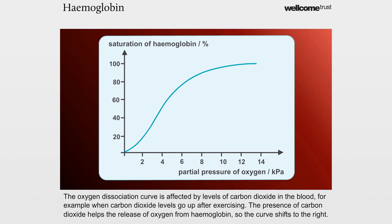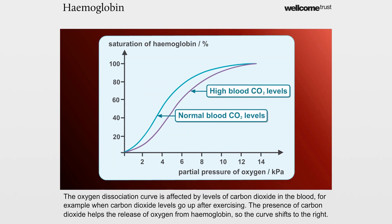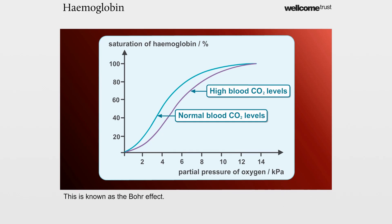The oxygen dissociation curve is affected by levels of carbon dioxide in the blood. For example, when carbon dioxide levels go up after exercising, the presence of carbon dioxide helps the release of oxygen from haemoglobin, so the curve shifts to the right. This is known as the Bohr effect.